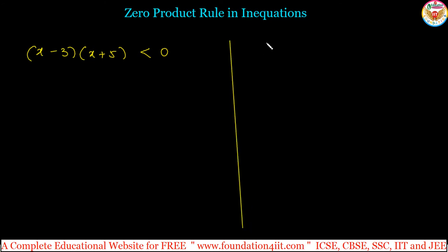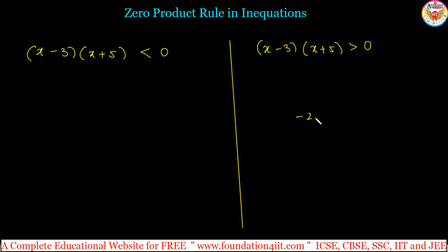Similarly, if x minus 3 into x plus 5 is greater than 0, the product of two expressions will be greater than 0 when both are negative or both are positive. For example, minus 2 into minus 3 is plus 6, which is greater than 0. So when both are negative or both are positive the value is greater than 0, and one negative and one positive gives less than 0.